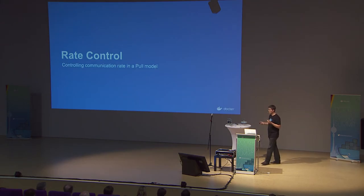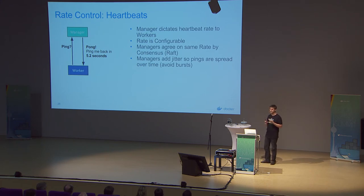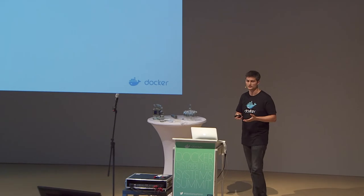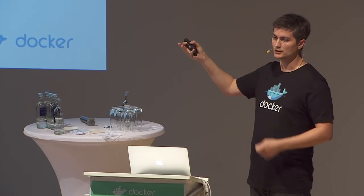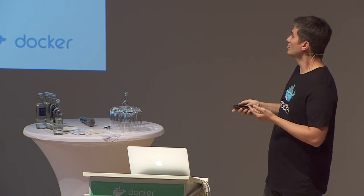Let's talk about rate control. There's a lot going on between a worker and a manager, but it's mostly two things: heartbeats for presence — the worker has to keep alive so the manager knows it's still alive — and actually sending the payload. For heartbeats, the worker sends a ping and the manager responds with a pong that contains the next time the worker should reach back.